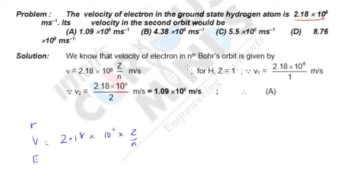Now given that for hydrogen atom in the first orbit, it is common sense. For H, Z = 1, so v₁ = 2.18 × 10^6 m/s. Now we are being asked about the second orbit.